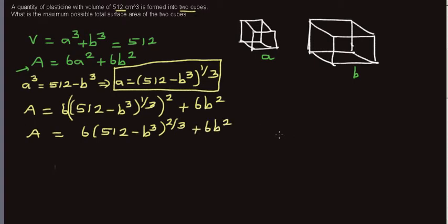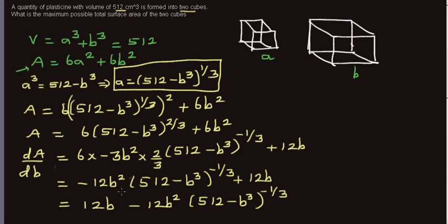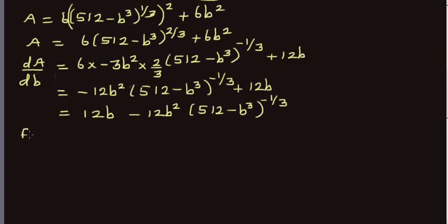You can pause the video and try to differentiate this to find dA/dB. For the maximum area, the gradient should be zero. Using the chain rule — differentiating the inside first, then the outside — we set dA/dB equal to zero.